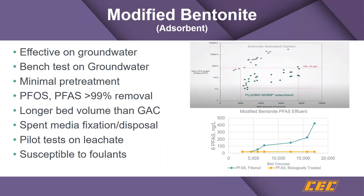These absorbents are pretty effective for leachate but typically require some pretreatment to avoid fouling. Comparing Fluorosorb versus granular activated carbon, the modified bentonite has a strong ability — more so than granular activated carbon — in the groundwater environment. It has a longer bed life than granular activated carbon and comparable capability to ion exchange. Comparing plain filtered leachate with biologically treated leachate, you see a significant difference in how much PFAS is absorbed.